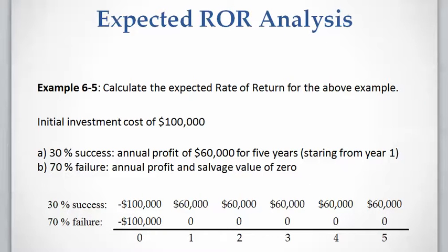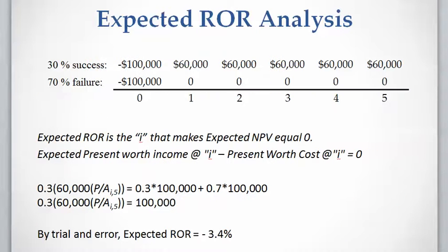Now let's calculate the expected rate of return for this example. The project requires $100,000 of investment at the present time. There is a 30% probability of success that yields $60,000 of income for five years from year one to year five, and a 70% probability of failure where the annual profit and salvage value will be zero.